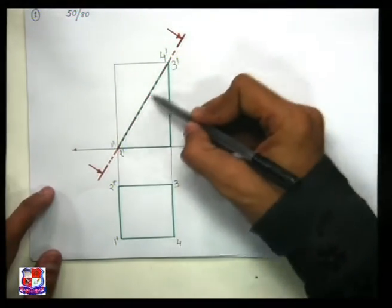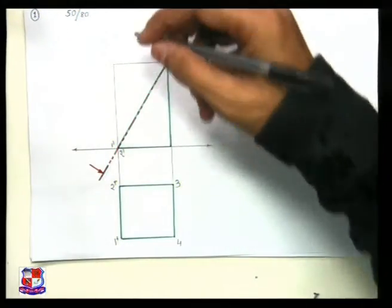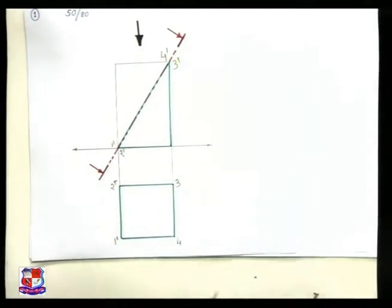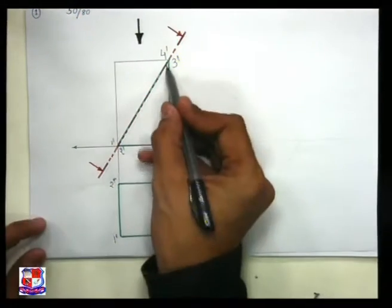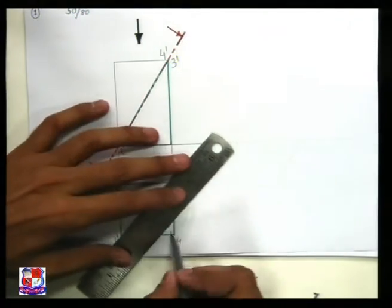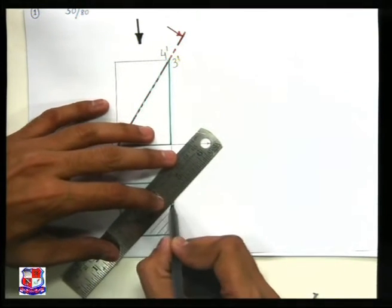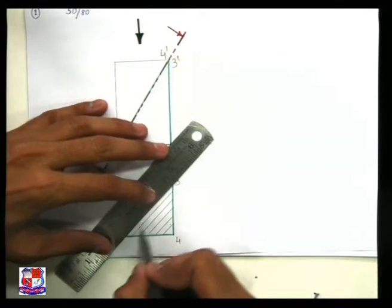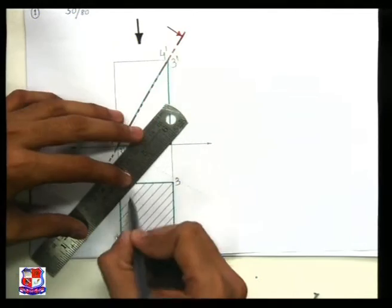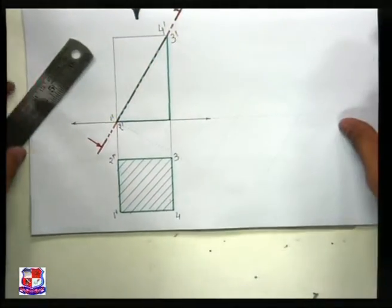Now if we cut with this cutting plane and look from the top, the total shape would be visible — hence this total square would be visible. In this square we have to draw section lines like this. This section line represents the sectional top view of this solid. You can write here: it is a sectional top view.